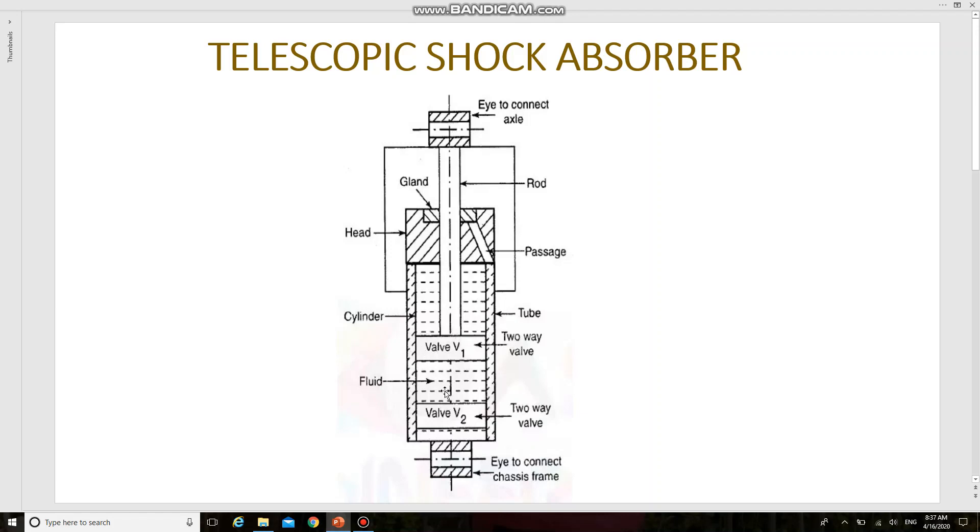A gland is provided on the head. This is the gland which is provided on the head. Fluid scraped out by the rod is brought down into the annular space through the inclined passage. So this is the inclined passage. This is the construction.